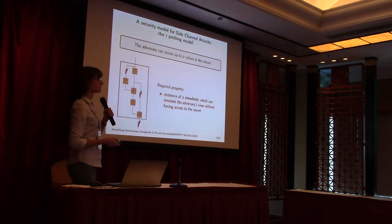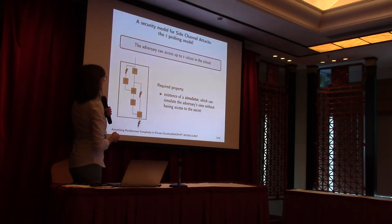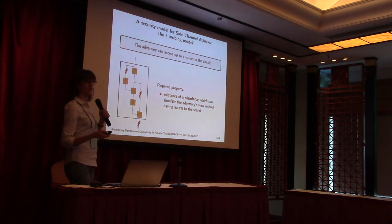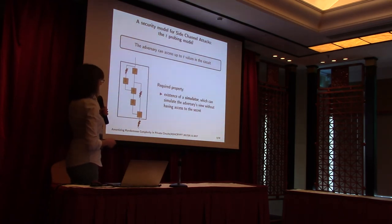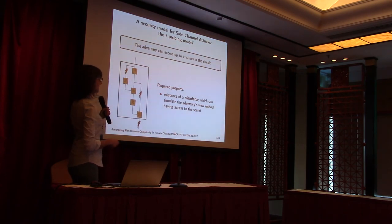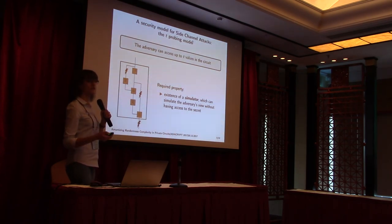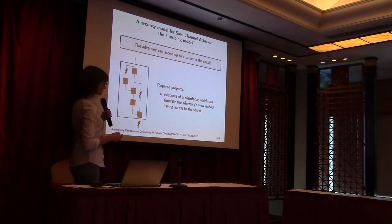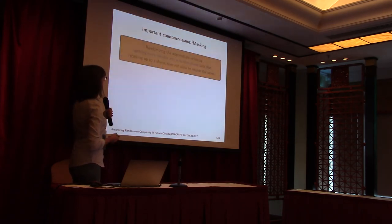The T-probing model, for those who were not here before, means that the adversary can access up to T values in a circuit. And the required property is the existence of a simulator which can simulate the adversary's view without accessing the circuit.